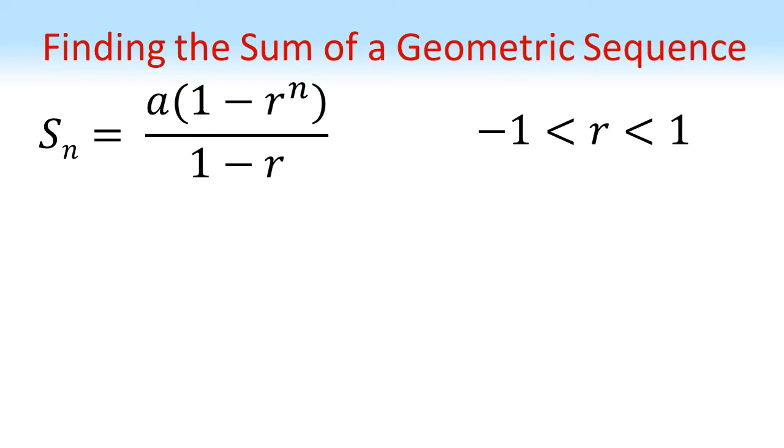Our sum to infinity, which we're going to write as S infinity, is the limit as n tends towards infinity of the formula a times 1 minus r to the n over 1 minus r.